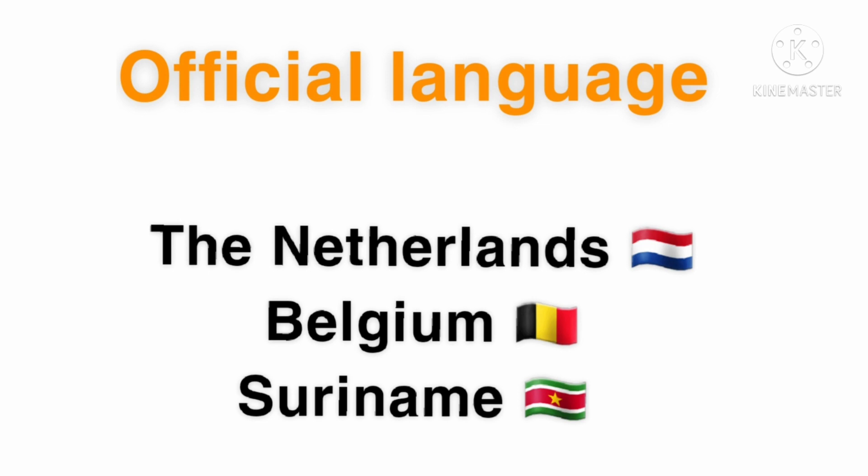Where do you speak this language? Dutch is an official language in the Netherlands, Belgium and Suriname. And it is also an official language of the European Union.